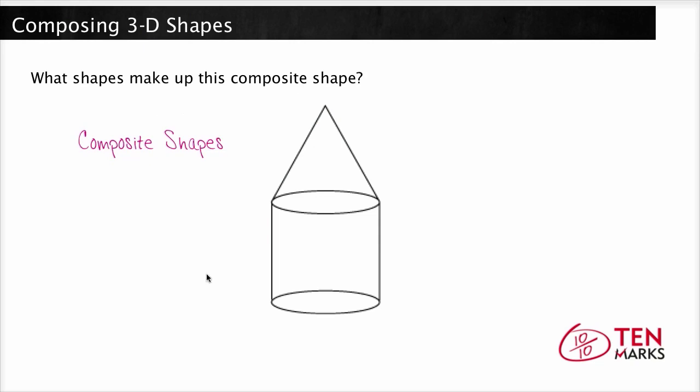Let's look. The top of this shape is a cone, as you can see here. The bottom of this shape is a cylinder. This composite shape is made up of a cone and a cylinder.